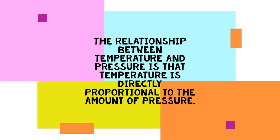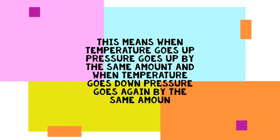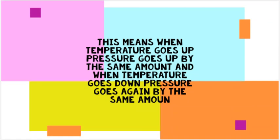The relationship between temperature and pressure is stated in Gay-Lussac's law. The amount of pressure on an object or certain area is directly proportional to the amount of heat or degree of temperature. When temperature goes down, pressure goes down by the same amount.